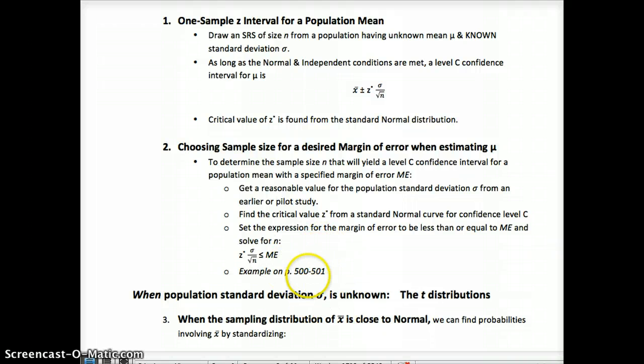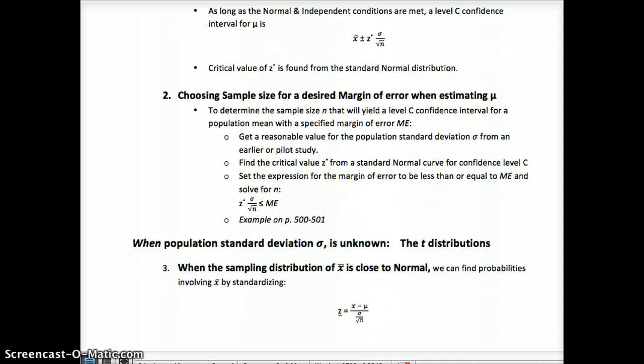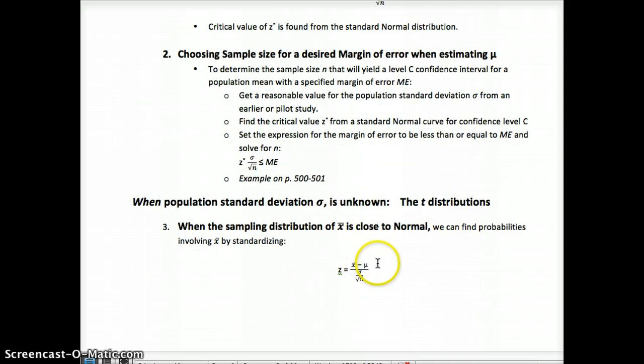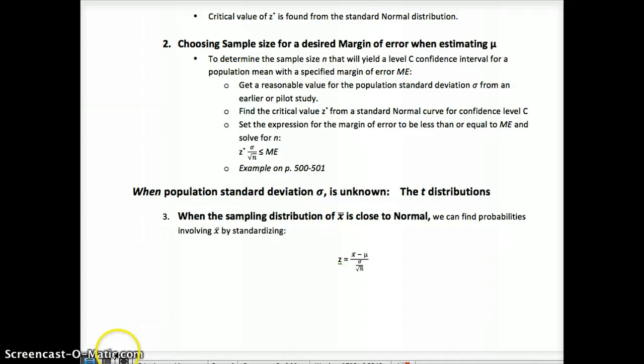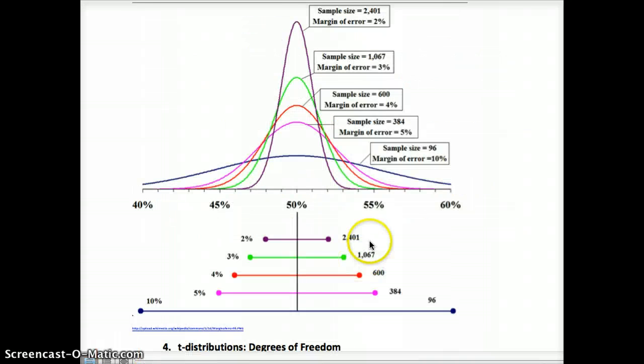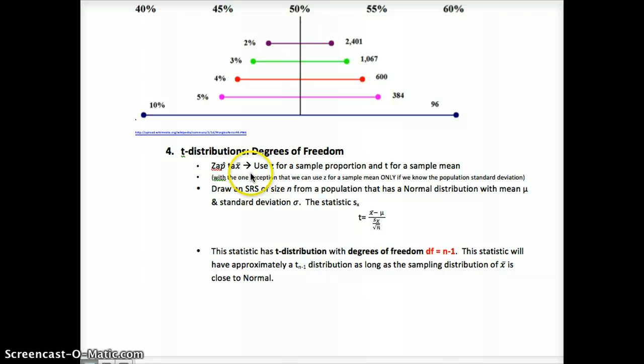We can only do this when the standard deviation is known to the population. Oftentimes we don't know that. So this works when we know the population standard deviation. If we don't, then we know that our standard deviation of our sample, if we have to use the standard deviation of the sample, we know it varies based on sample size. So we have to have critical values that also vary based on sample size. And that's where degrees of freedom comes in for the t-distribution. Now a good way to remember this is ZAPTACs: z-score for a p-hat, so z for a sample proportion, t for a sample mean. Except for in that rare case when we know the true population standard deviation.